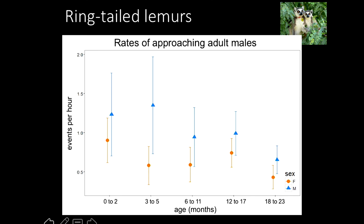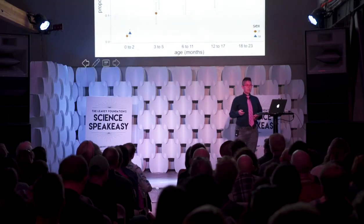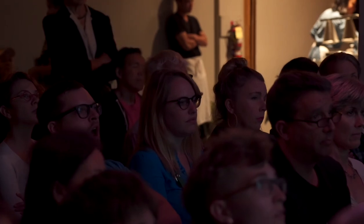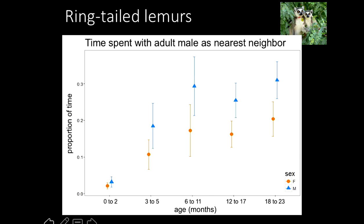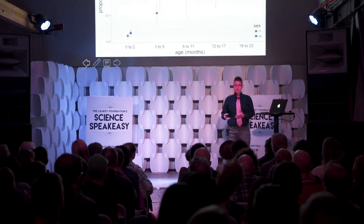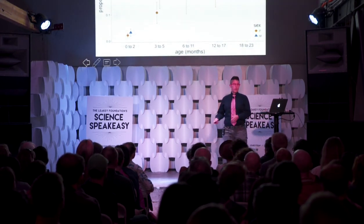What about intrinsically motivated socialization? One way individuals can experience the world in sex-typed ways is by seeking out different sets of social interactions themselves. Here are the rates at which my male and female ring-tailed lemurs approached adult males from birth through two years of age. At all ages, infant and juvenile males approach adult males at higher rates than their female peers. This results in infant and juvenile males — except when they're tiny and clinging to mom — spending more time in close proximity with adult males, seeing male behavior more often than infant and juvenile females do.